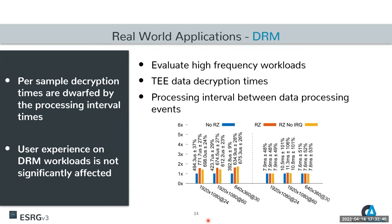The second application evaluated is a DRM application, which helps evaluate the impact on high-frequency workloads. The DRM application decrypts video content in the TEE and makes it available to the normal world for presentation to the user. We measured TEE data decryption times and observed a 1.5x slowdown. However, because the interval between data processing events is much larger than the decryption time itself, we find that the user experience on DRM workloads is not significantly affected.